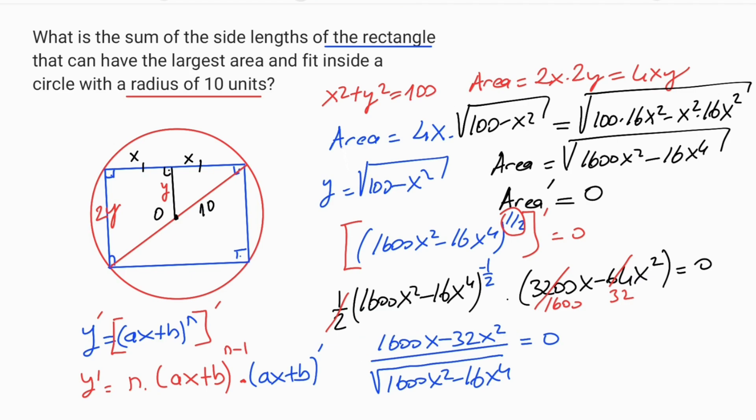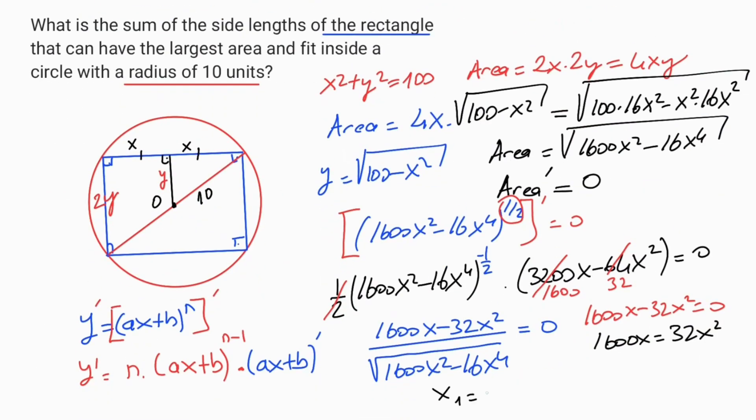That means the numerator must be equal 0. So 1600x minus 32x squared equals 0. That means 1600x equal 32x squared.